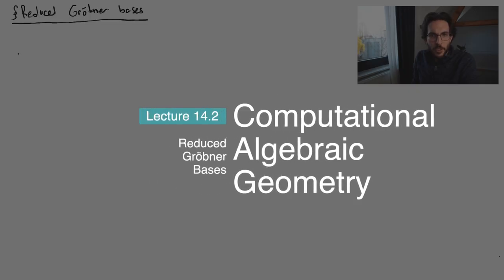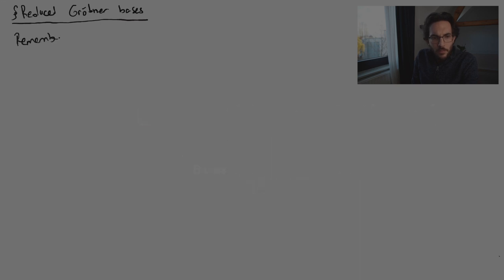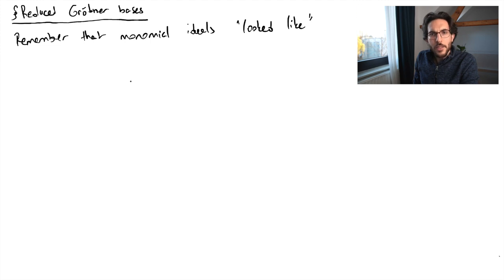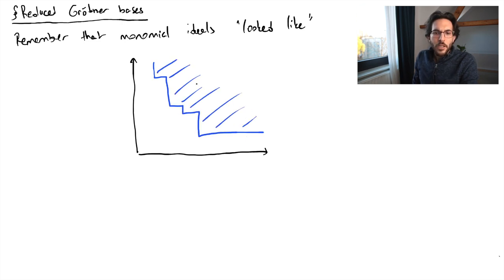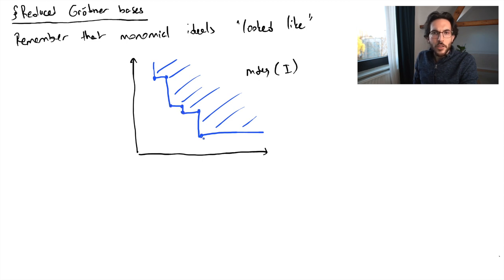Let's remember monomial ideals very briefly. We had pictures to represent monomial ideals where we essentially compute the multi-degrees of the monomials inside of an ideal, and that gave us a shape. In two dimensions we could plot such a picture, and we said that for the monomial ideal we only had to keep track of the corners. These corners gave us exponent vectors and the corresponding monomials would generate the monomial ideal, and all these corners are unique so that we have a unique minimal basis for a monomial ideal.